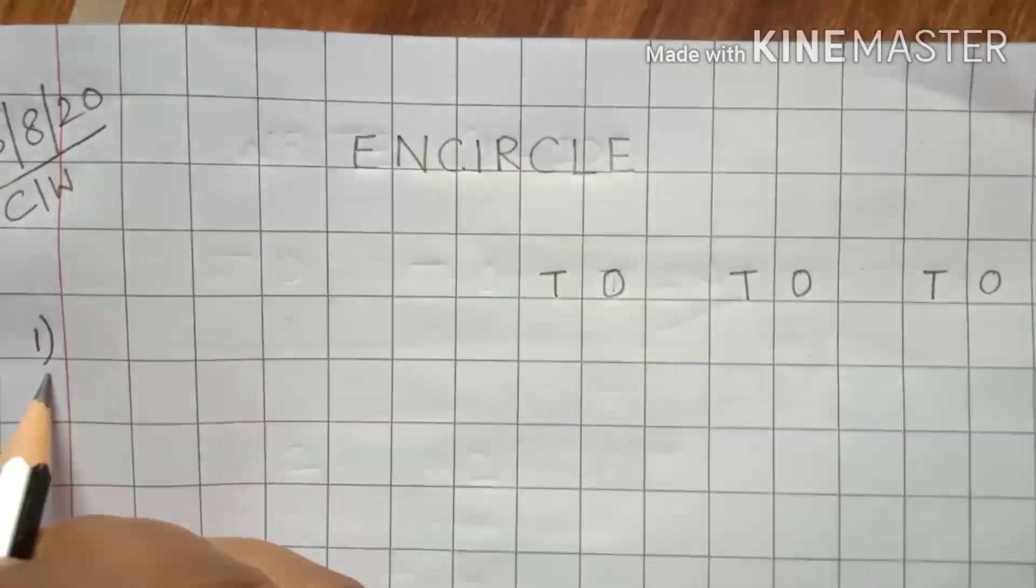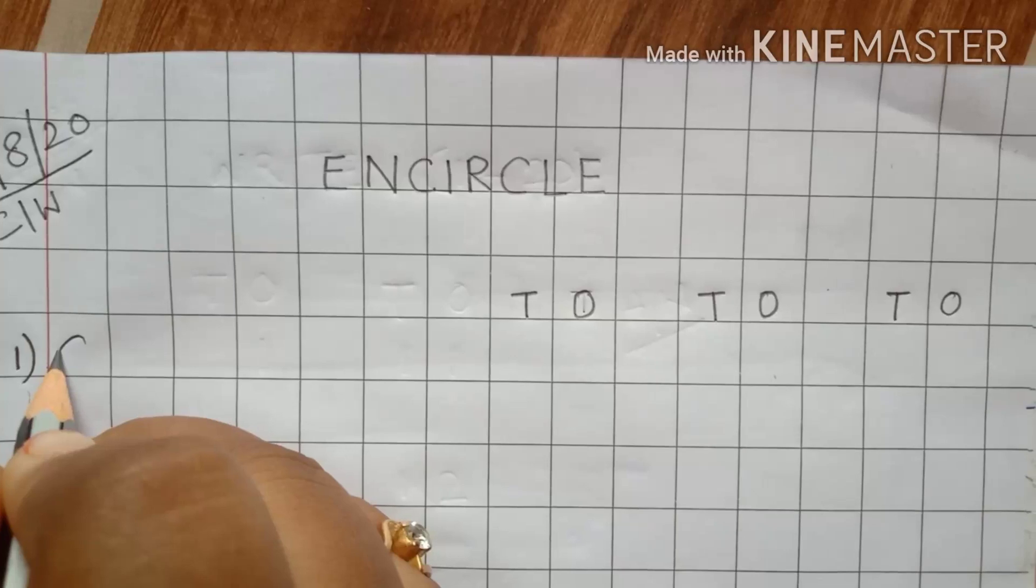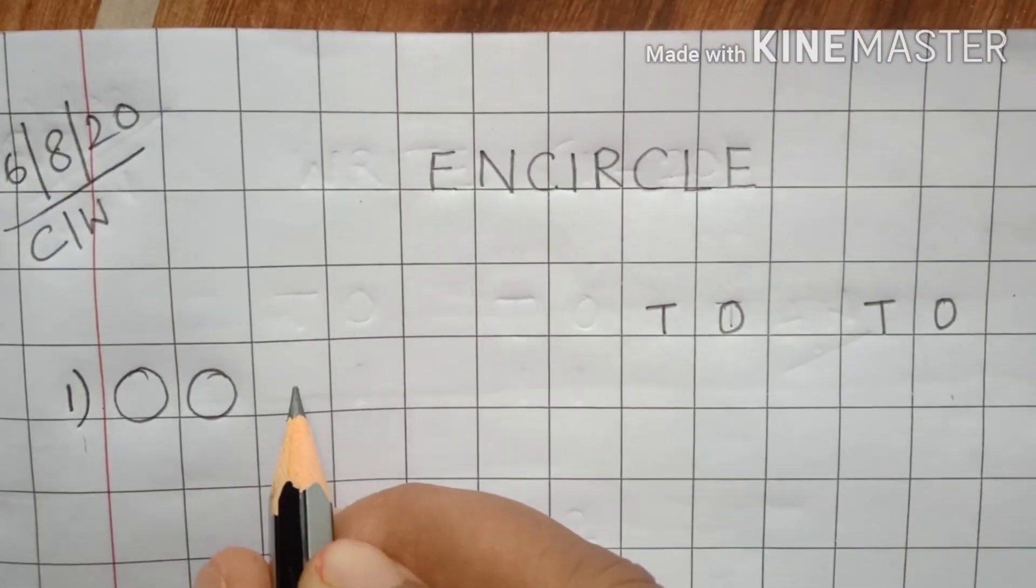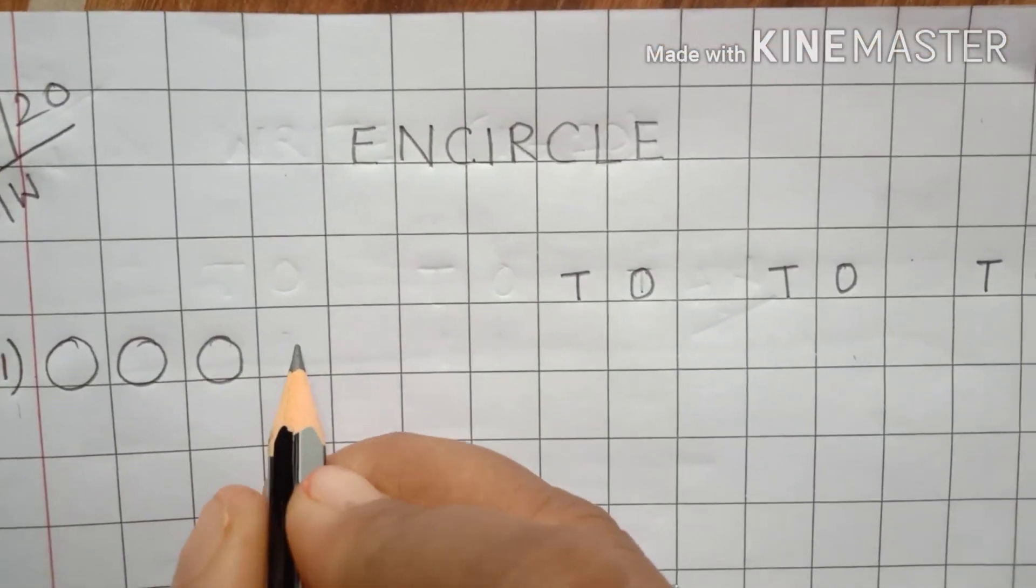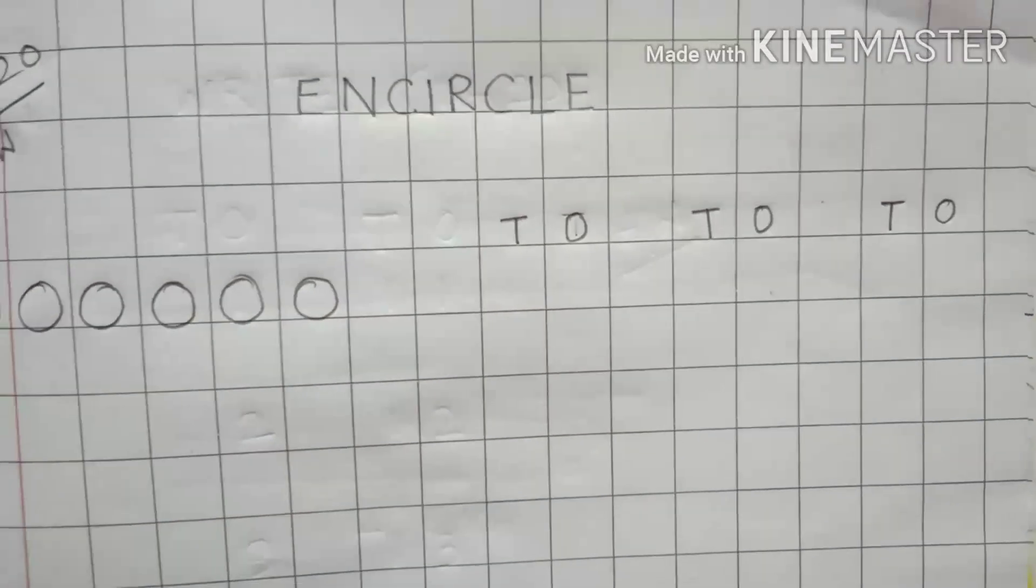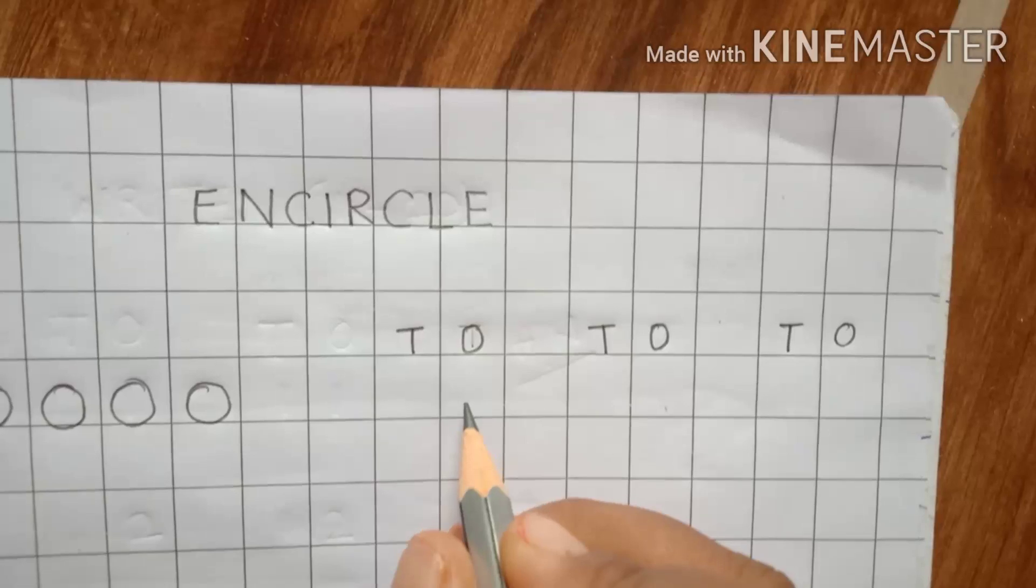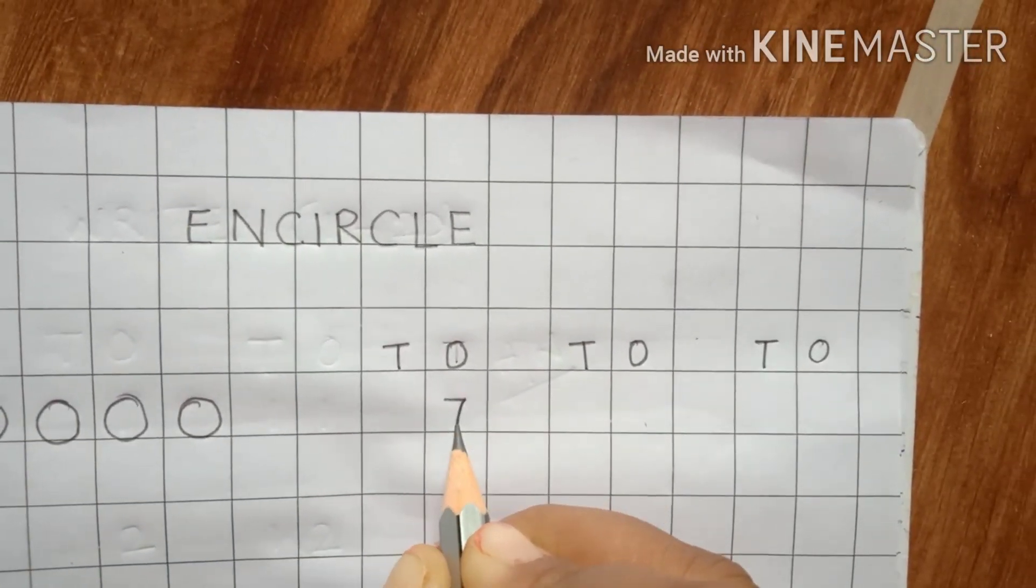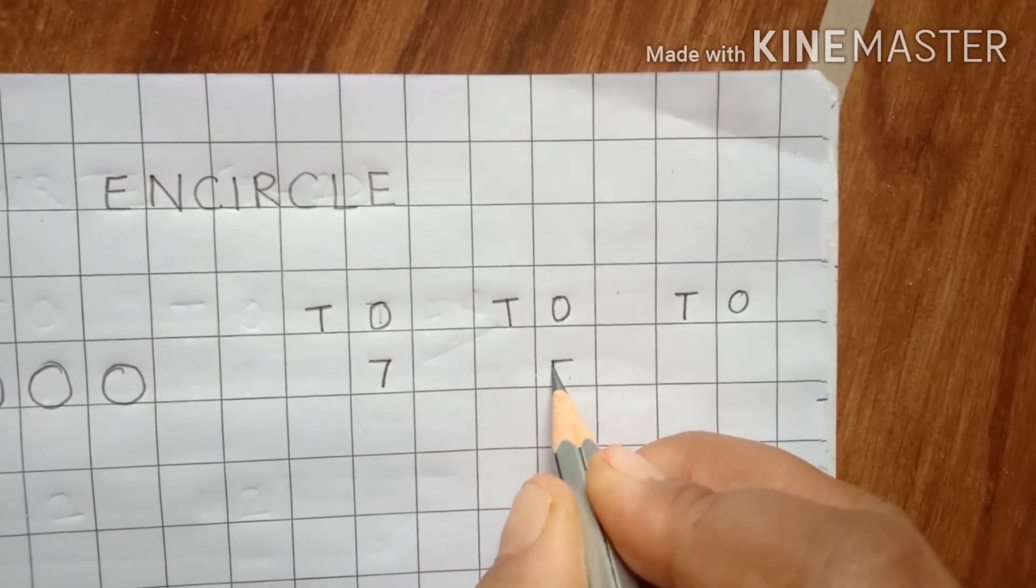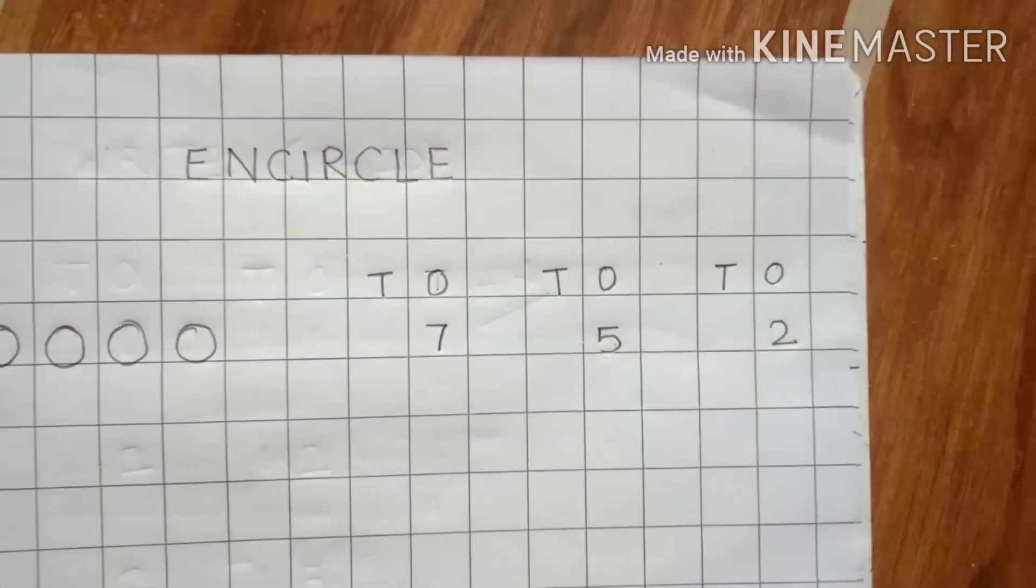Now coming back to the number 1, we will draw here some pictures. We will draw circle 1, 2, 3, 4 and 5. Now under 1s, we will write suppose 7. Then under this 1s, we will write here 5. And under here, this 1s, we will write here 2.